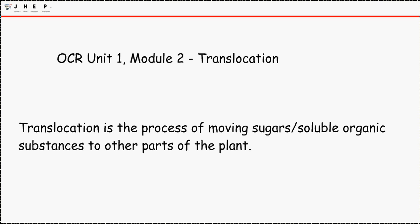But first of all, the definition for it is the translocation is the process of moving sugars and soluble organic substances to the other parts of the plant. For that to happen, it needs to either go up or down. So it will be travelling through the phloem.